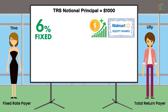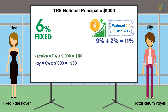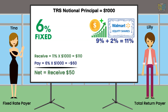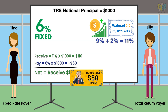Suppose this year the share price of Walmart increases by 9%, and the dividend yield is 2%. Thus, the total return will be 11%. Let us understand how the swap will be settled in this scenario. From Tina's perspective, she has to receive 11% from Lily and pay 6% to her. We can net this payment and say that Tina has to receive 5% from Lily on the settlement date. 5% of $1,000 is $50, so Tina will receive this amount from Lily.